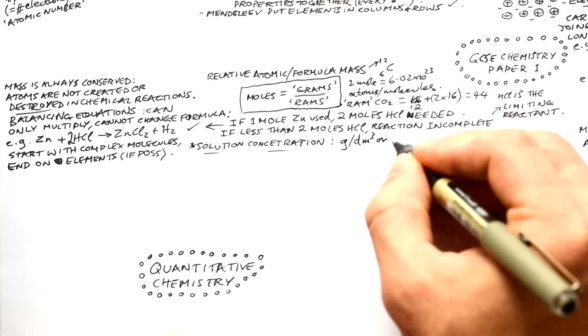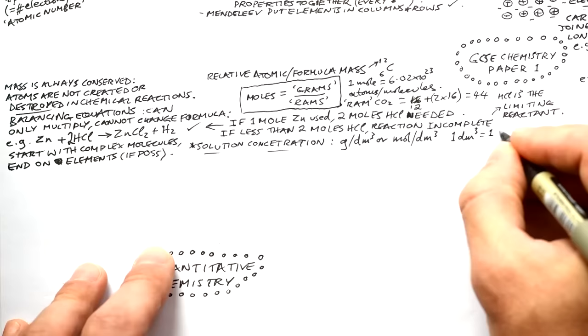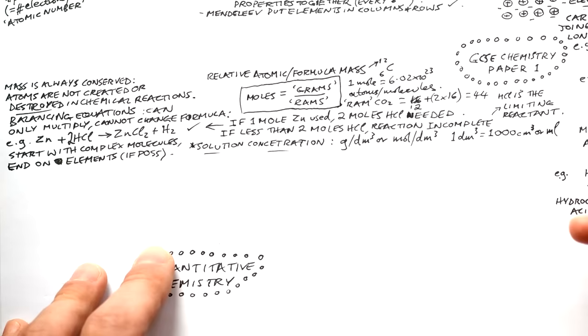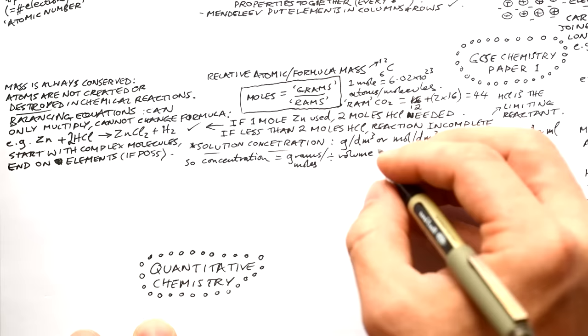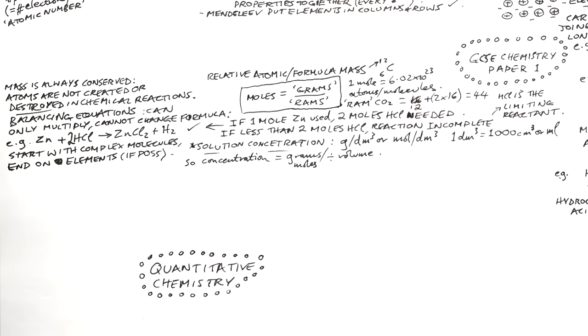Solution concentration is measured in grams per dm³ or moles per dm³ — it's just how much stuff is dissolved in a decimetre cubed. A dm³ equals 1000 cm³ or 1000 mL. Concentration equals grams or moles divided by the volume of the solvent in dm³. When converting, remember you'll always end up with more cm³ than dm³ because cm³ are smaller units.